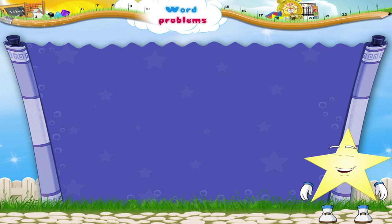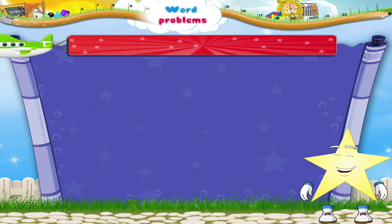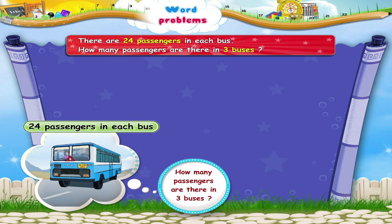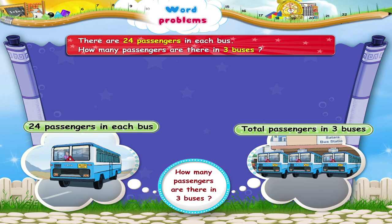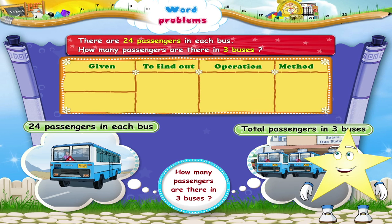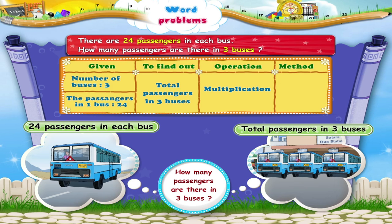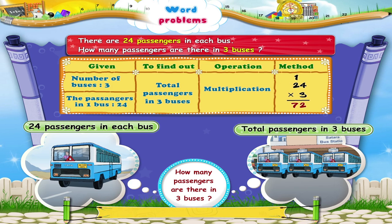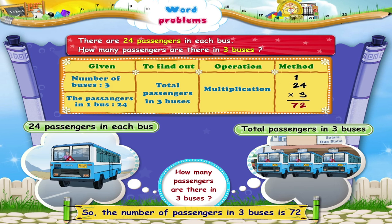Now, Starry, we will solve these word problems together. If one bus has 24 passengers, how many passengers are there in 3 buses? You are given that the number of buses is 3, and the passengers in one bus is 24. We multiply the number of passengers in each bus, which is 24, with the number of buses. So, the number of passengers in 3 buses is 72.